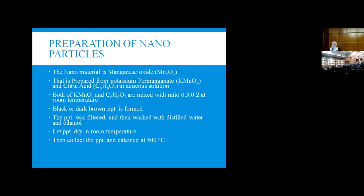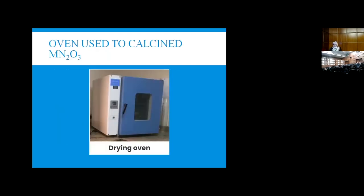After that, calcination is done. The function of calcination is to make nanoparticles. Calcination is done at high temperature. This oven is used in order to make calcination of the nanoparticles, which is magnesium oxide.